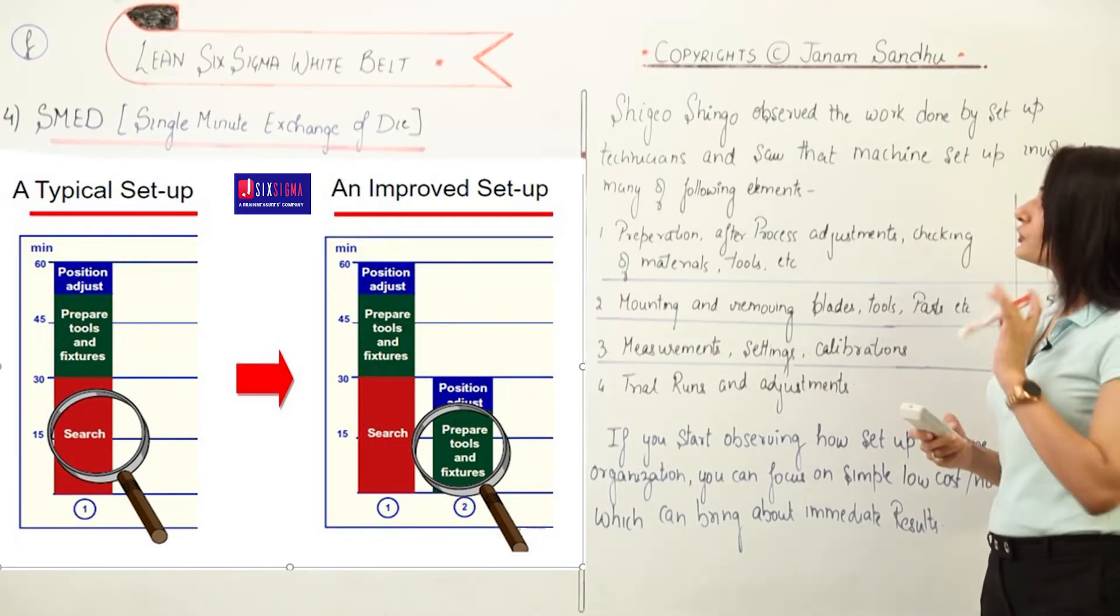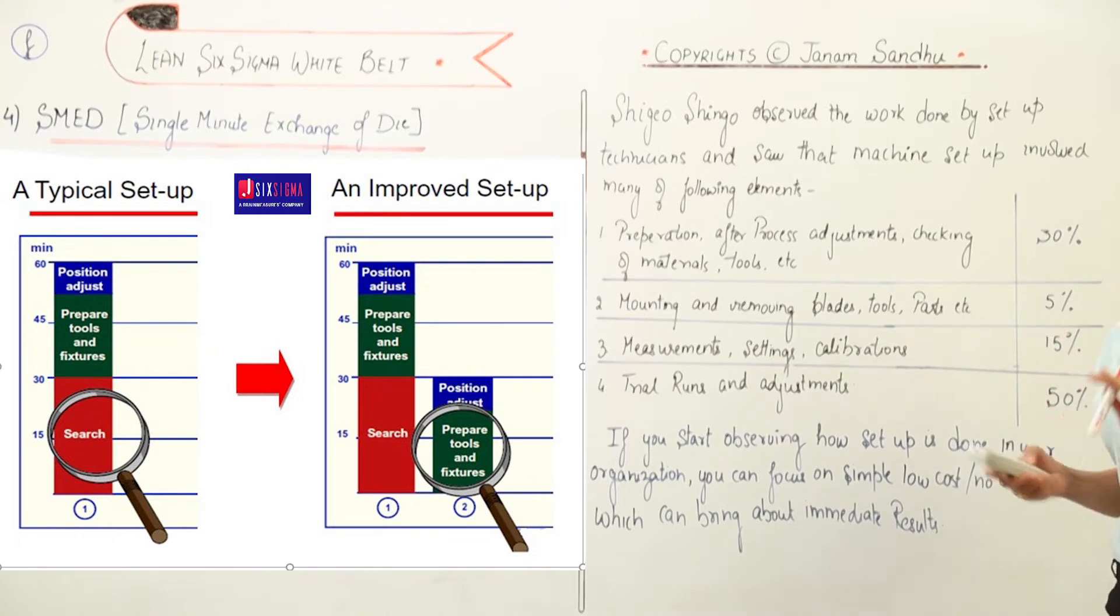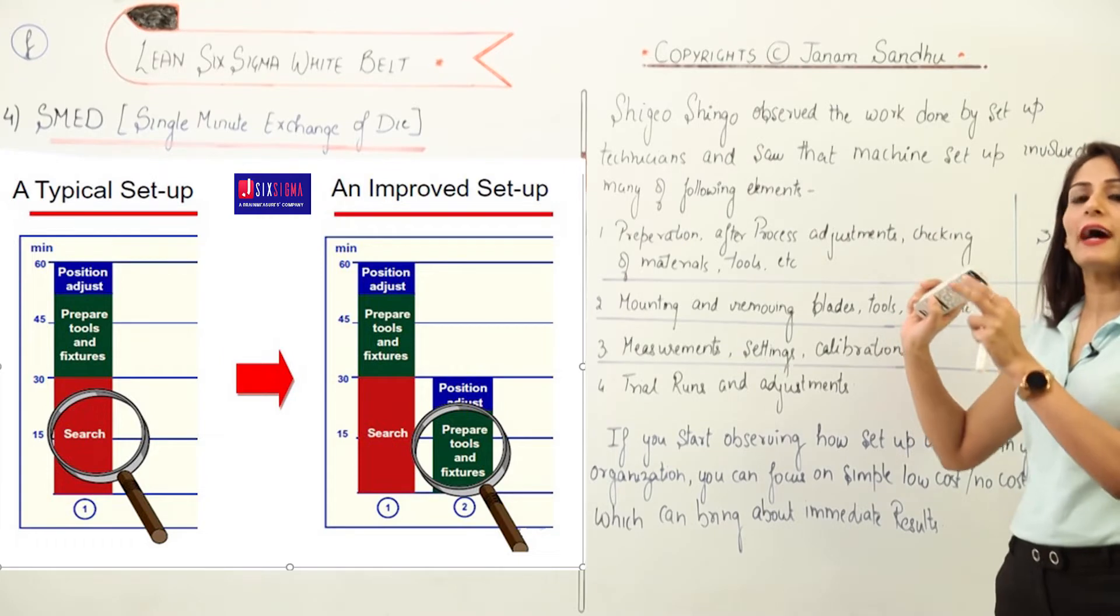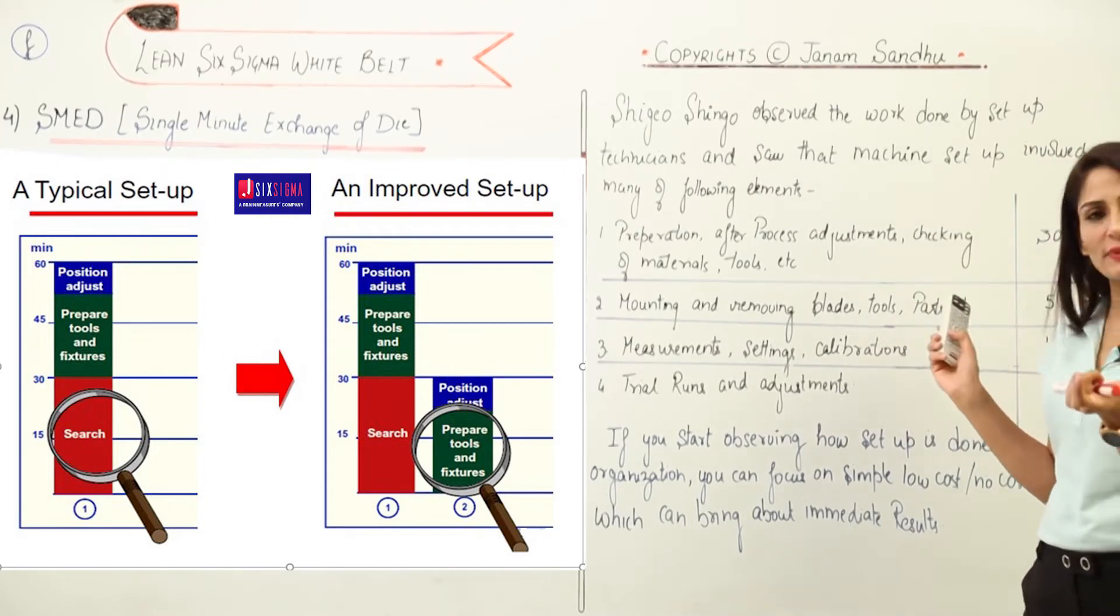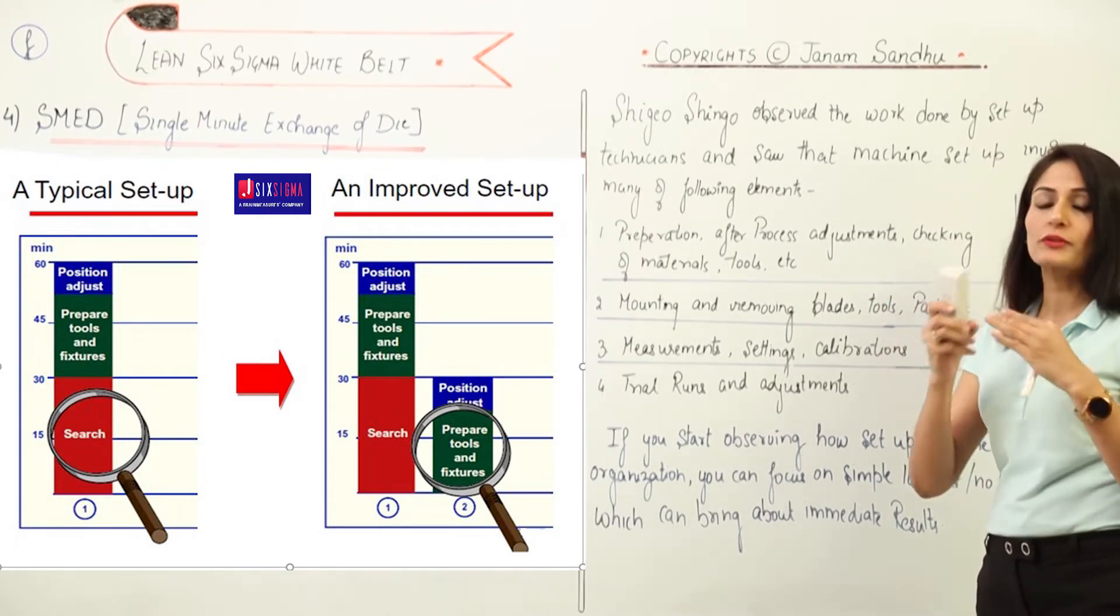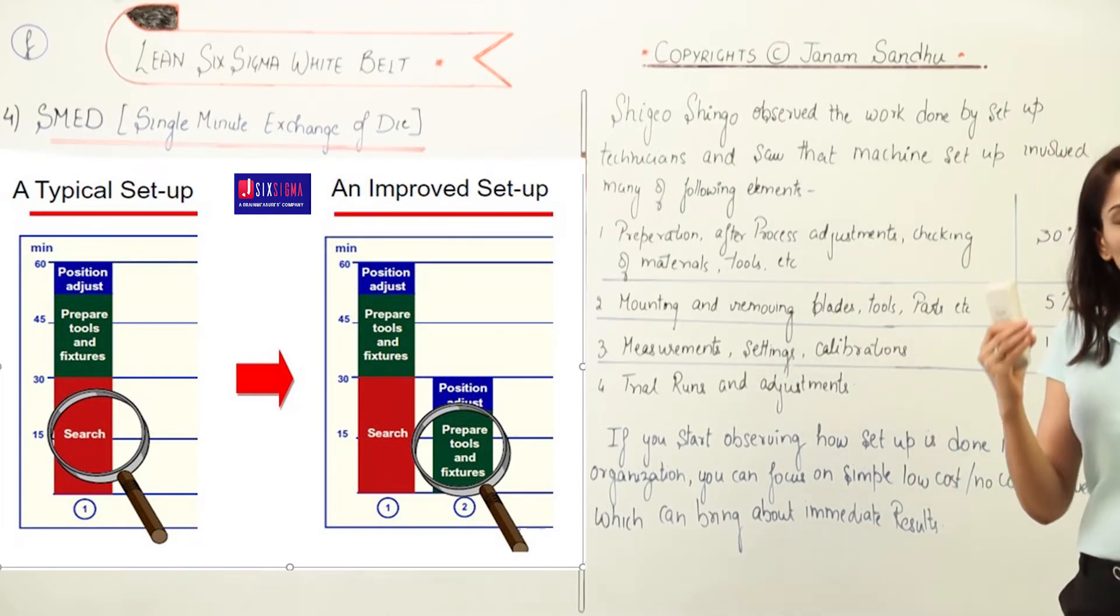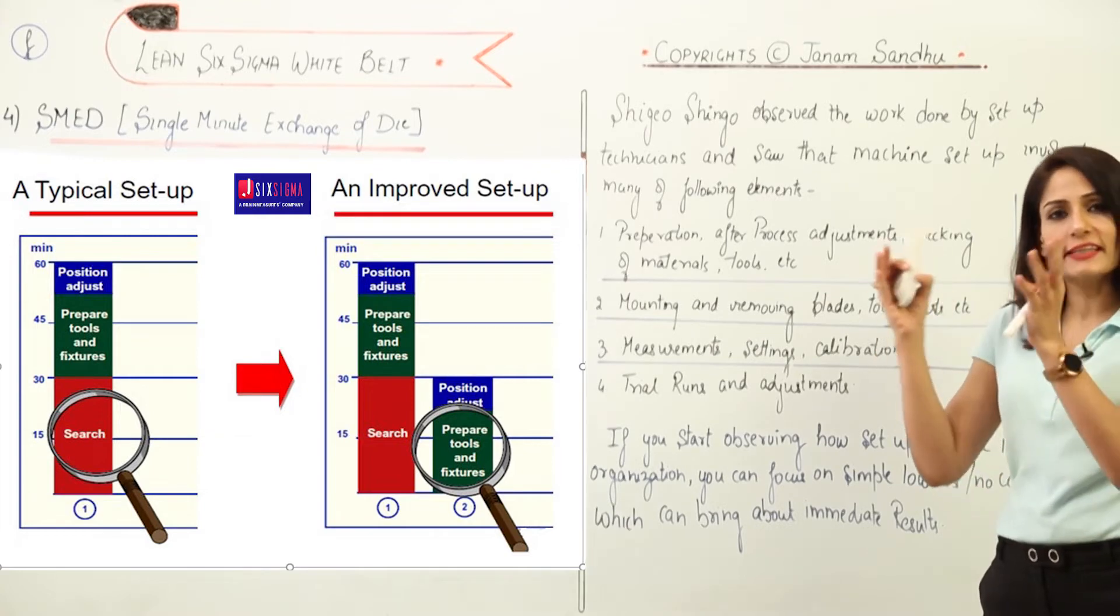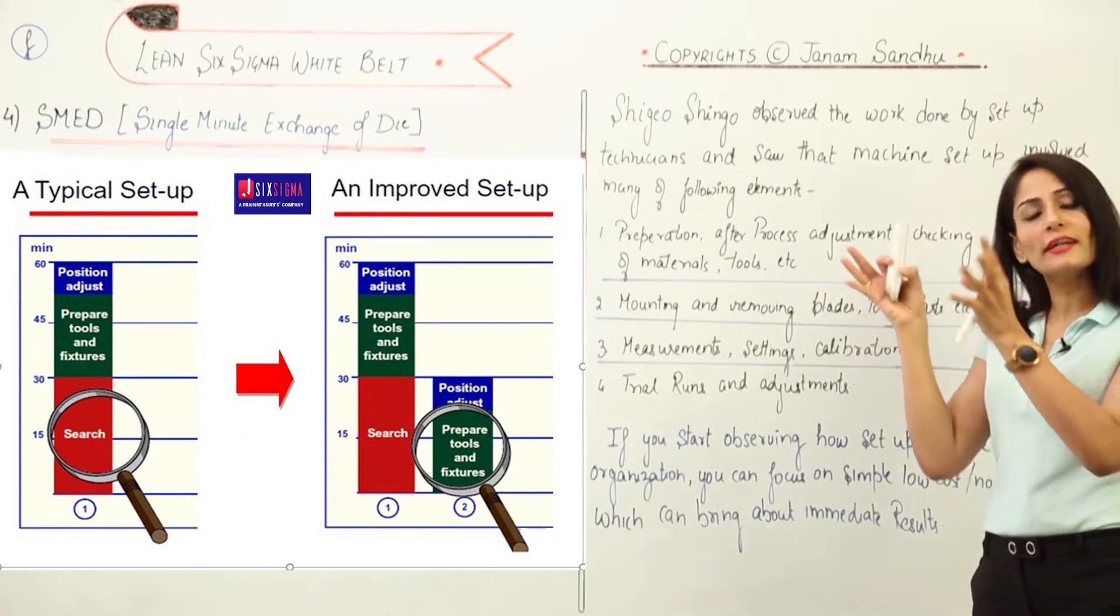When Shigeo Shingo observed the work done by setup technicians and saw that machine setup involved many of the following elements, I'll just read through it. I've given approximate times for what he observed, and then he found out how much time they were utilizing for simple changeover processes and why this time needed to be reduced.